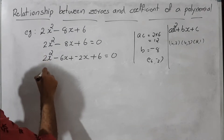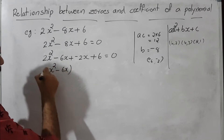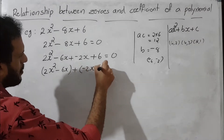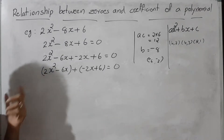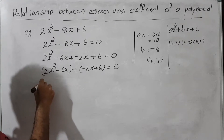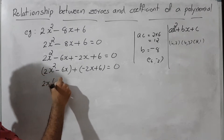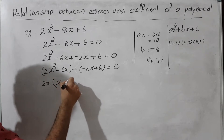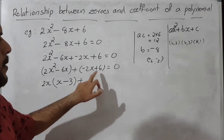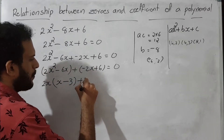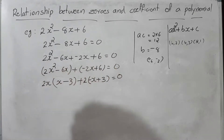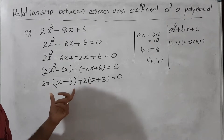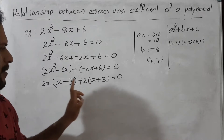So we write: 2x² minus 6x plus minus 2x plus 6 equals 0. Grouping: (2x² minus 6x) plus (minus 2x plus 6) equals 0. Taking common factor 2x from first bracket: 2x(x minus 3), and taking 2 from second bracket.